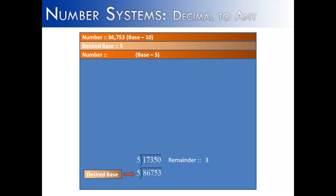But what we're going to do now is divide 17,350 by 5. When we do that, 5 goes into it 3,470 times with a remainder of 0. When we divide it again, we get 694. Divided again by 5, we get 138 with a remainder of 4.